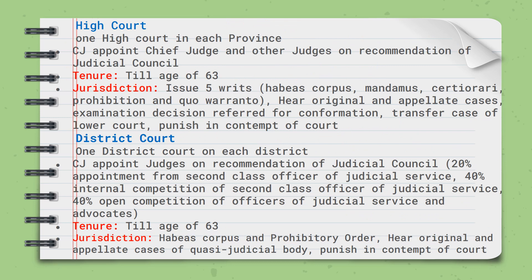There is one High Court in each province. Altogether we have seven provinces, so there are seven High Courts. And in every district, there is one District Court.